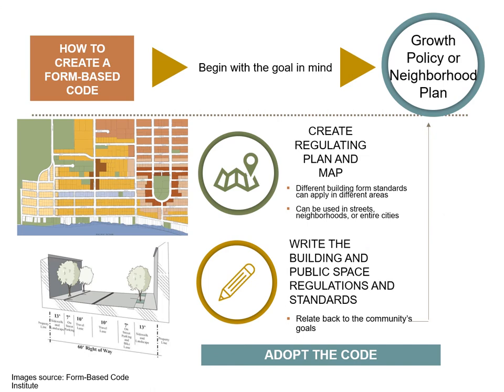How to create a form-based code. Form-based codes start with a vision and plan for a place. A city-wide growth policy is broad and comprehensive and may generally discuss the character of different sections of the city, but stops short of detailed plans for each area. Montana's statute allows for neighborhood plans to be included in growth policies, and many communities develop such plans after the city-wide plan is adopted. The neighborhood plan can become an official part of the growth policy through amendment. In Montana, many downtown master plans are adopted into the growth policy as neighborhood plan amendments. Public engagement is essential to developing a successful code — the form-based code only works if it implements a community's vision, so you need to engage the public from the start.